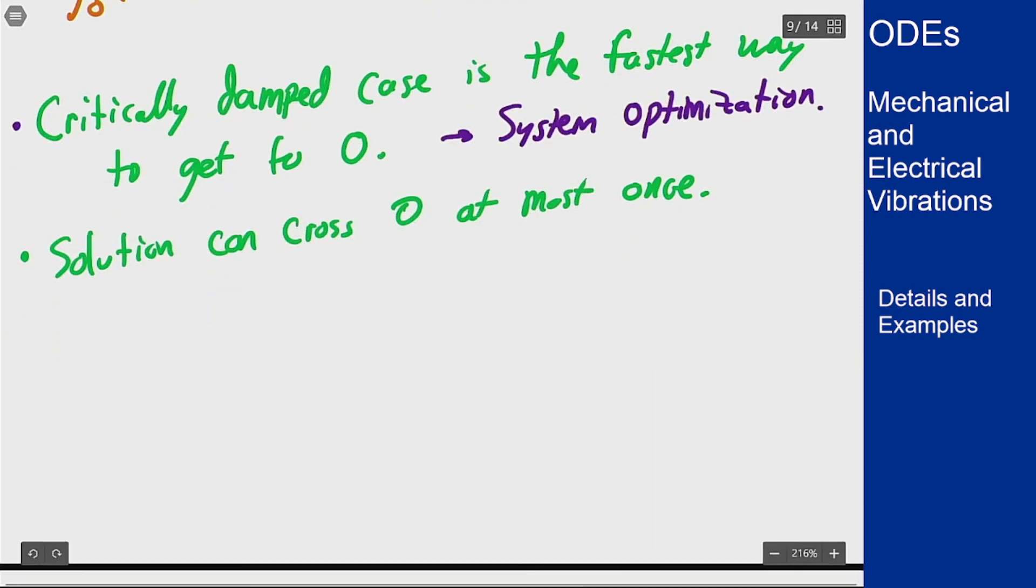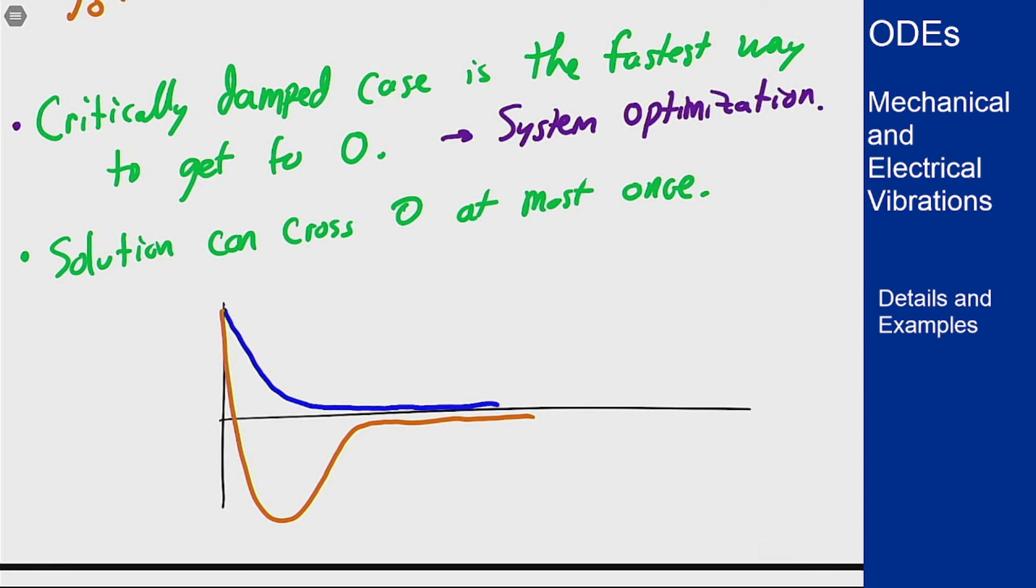These solutions here are going to look something like if I were to start here my critically damped one might look something like this, or if I have a large velocity that's negative something that goes like this and comes back up. And overdamped might be a sort of slower decay down to zero but still going to decay away. This is overdamped, these are both critically damped.